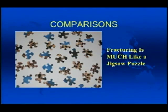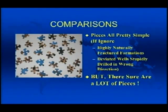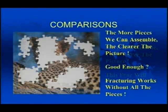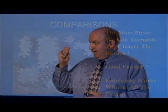I tried to come up with a comparison to start the talk — naturally I thought of the blind man and the elephant, and that's not bad for fracturing. But today I think fracturing is much like a jigsaw puzzle. If we look at all the pieces, each piece is pretty simple — so long as we ignore highly naturally fractured reservoirs and deviated wells drilled in the wrong direction, each piece of fracturing is very simple. But there sure are a lot of pieces. The more pieces we assemble, the better picture we see. We can recognize the picture without all the pieces, and fracturing will work without all the pieces.